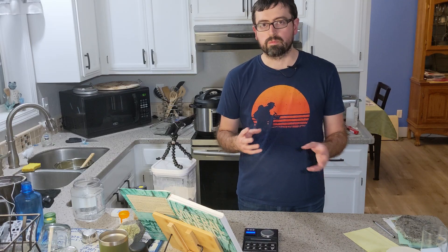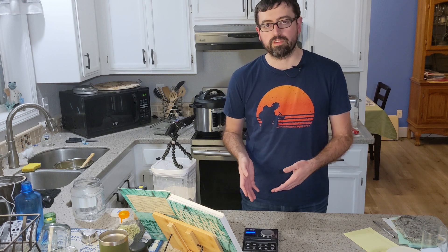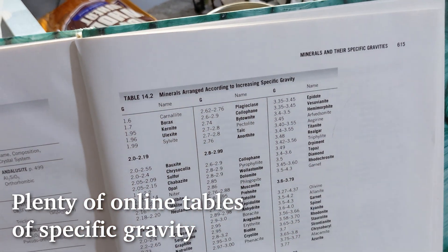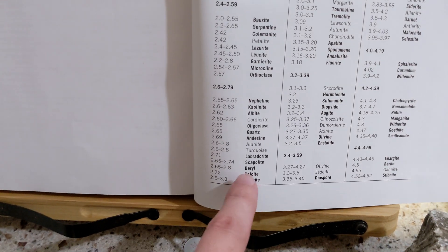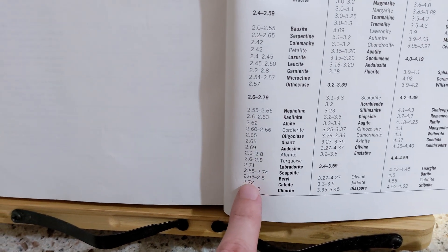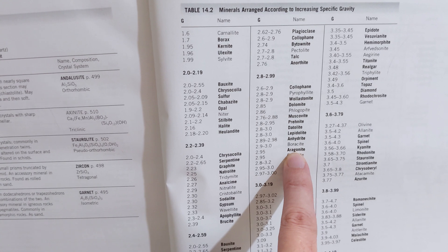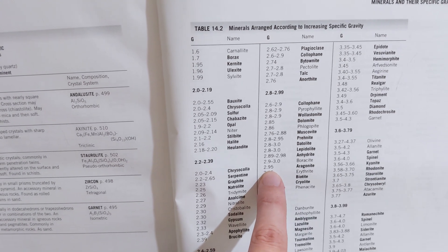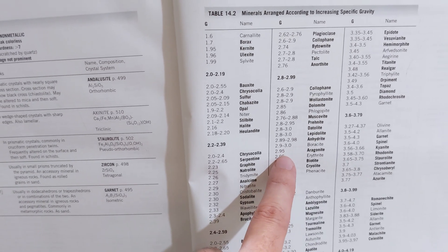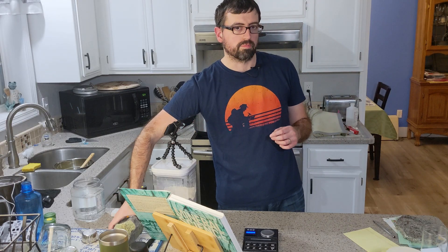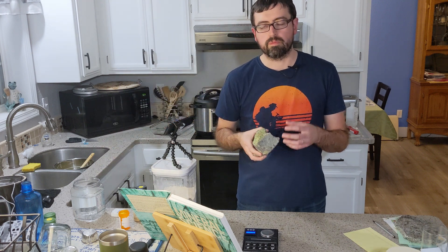When it comes to differences in packing arrangements and how that relates to specific gravity, one of my favorite examples is calcite. Looking at my mineral science book arranged by increasing specific gravity: calcite, which is calcium carbonate, CaCO3, has a specific gravity of 2.72. Aragonite is also CaCO3, calcium carbonate, but the atoms are arranged differently and it has a specific gravity of 2.95 — a higher specific gravity even though it's made of the same stuff.